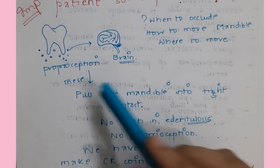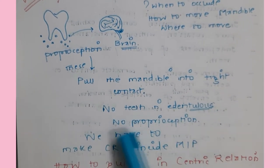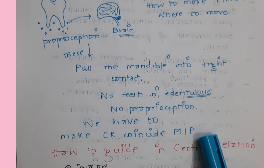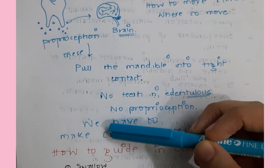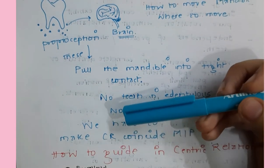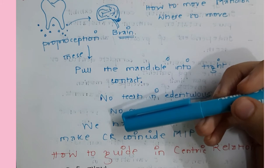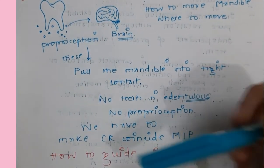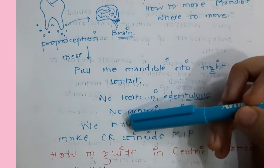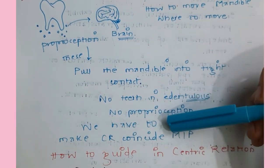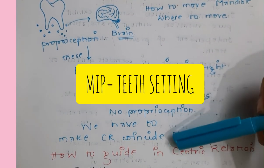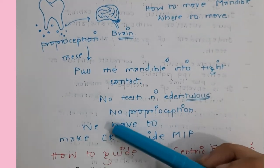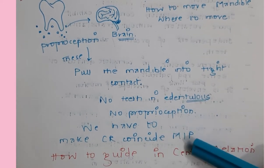Proprioception helps pull the mandible into tight contact. With no teeth in edentulous patients, there is no proprioception - we must make centric relation coincide with maximum intercuspation. We guide the patient in centric relation by asking them to swallow and then contact the occlusal rim, or ask the patient to take the tip of the tongue to the posterior palatal seal area and close. We record centric relation, mount the casts on the articulator, and set teeth in maximum intercuspation - that is tight cusp-to-fossa contact.